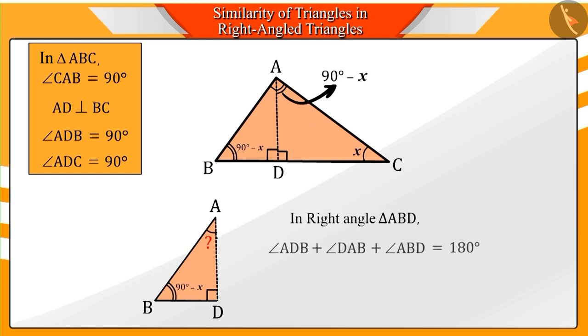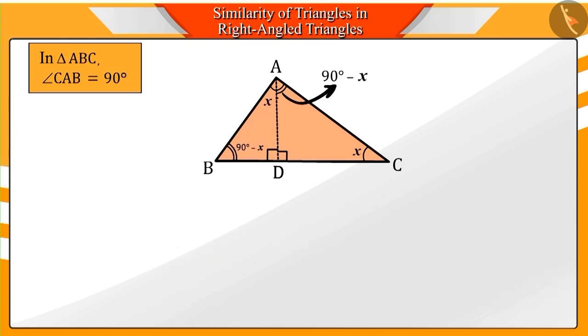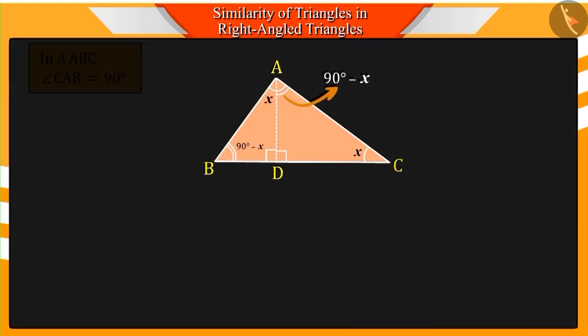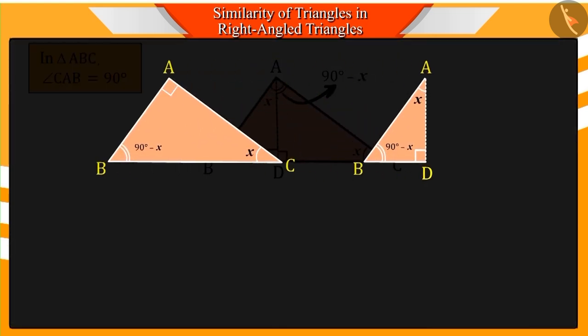Well done! The measurement of angle DAB will be X. Can we make any more observations of these triangles? For this, we focus on triangles ABC and ABD.